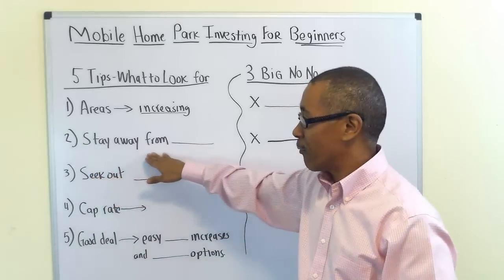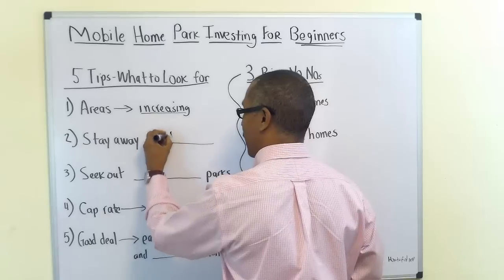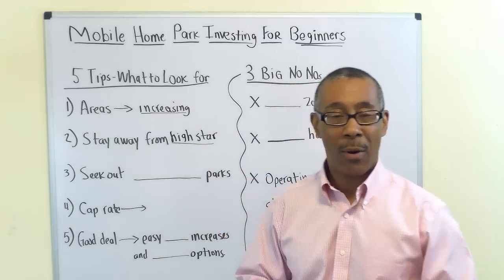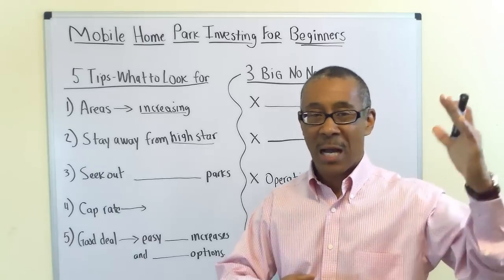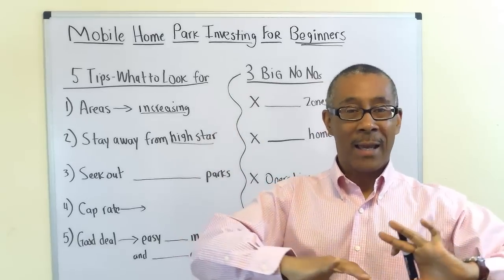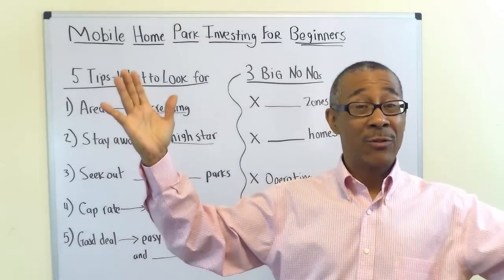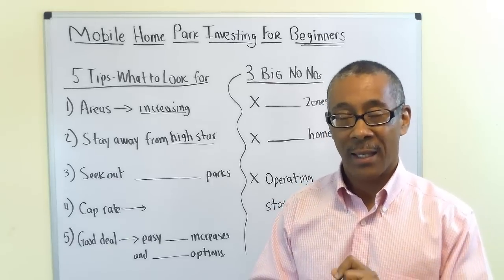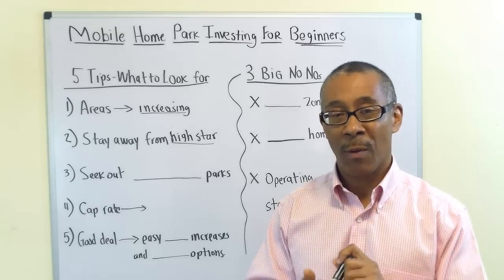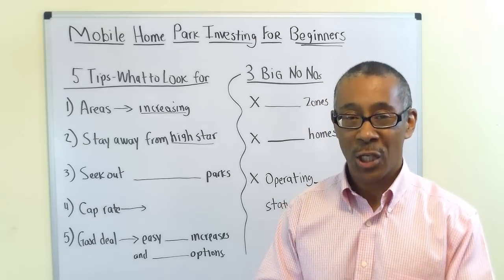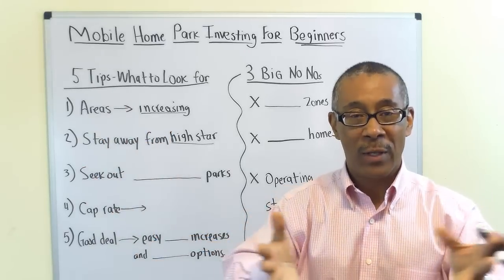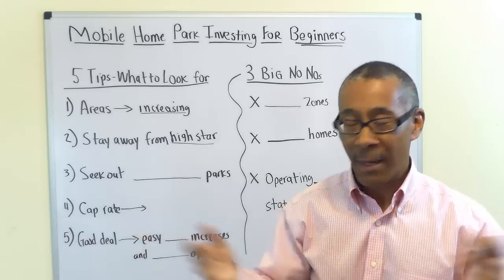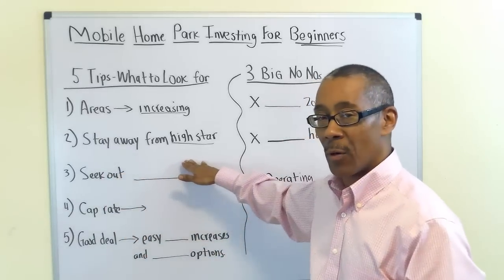Tip two: stay away from the high-star mobile home parks — the A-class, top-of-the-line ones with clubhouses, magnificent landscaping, and grand entrances. The name of the game in mobile home park investing is affordability. Your park should be a clean, cheap place to live — that's when you get the most people moving in and it will be most consistent. People with too-high incomes have options and resources to leave.